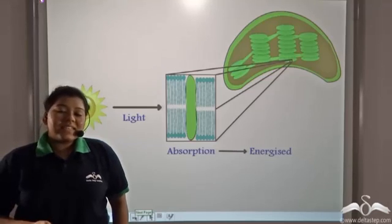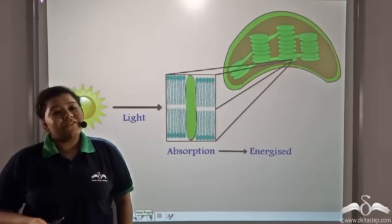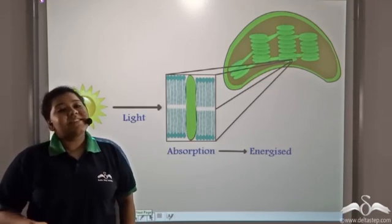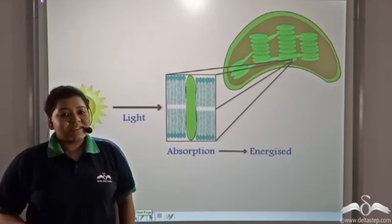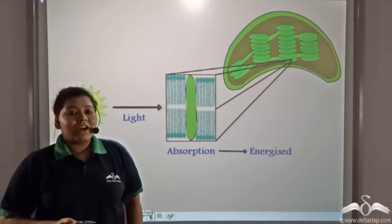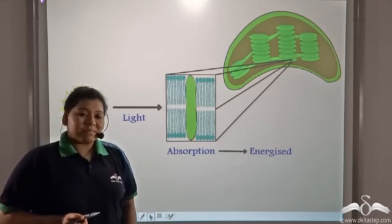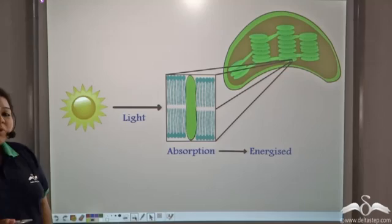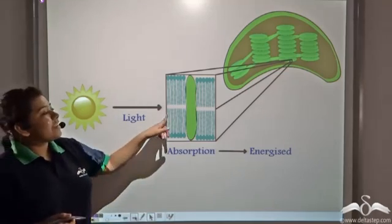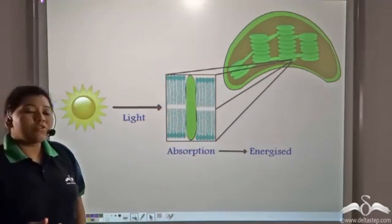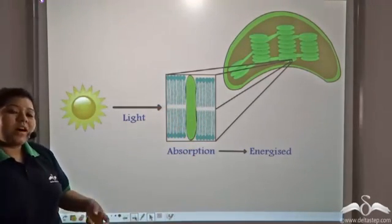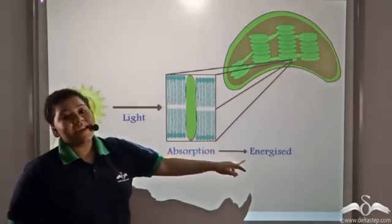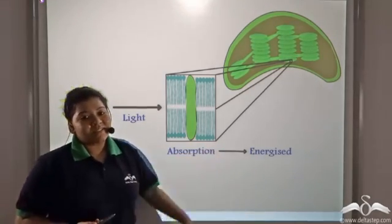The formation of ATP from light energy is done in various steps. First, the chlorophyll present in the membrane of thylakoids absorbs the solar energy and gets energised.